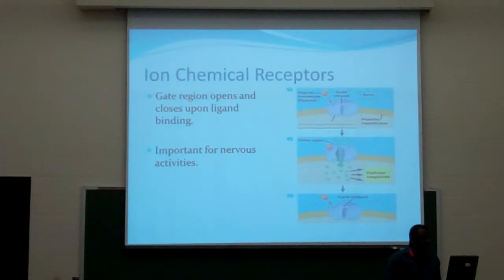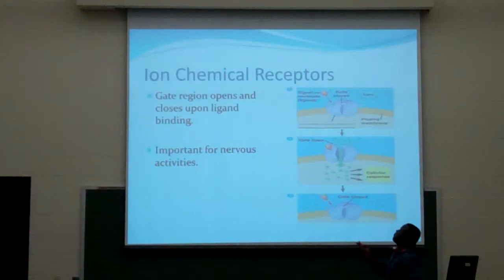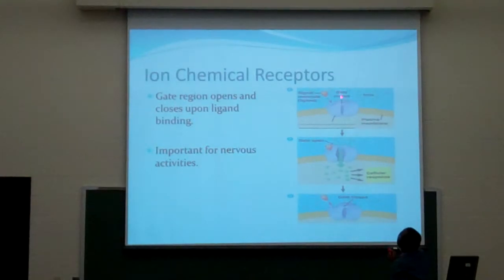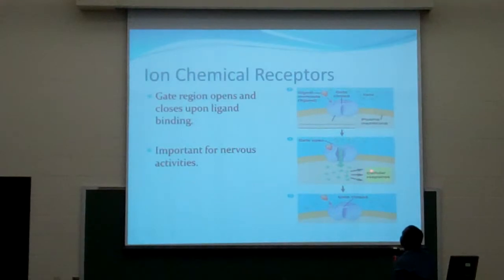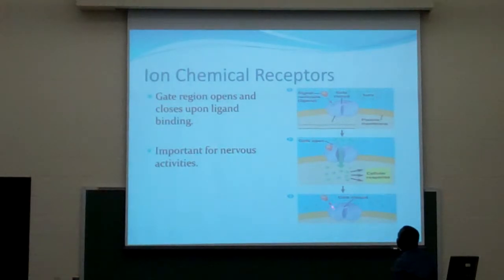This is another kind of receptor called the ion channel receptor. The ion channel receptor functions as an opening gate. When a signal is received, the gate opens and then ions flow through. When ions flow through, the concentration of that particular ion becomes greater in the cytoplasm, and then it triggers a response in the cell, which corresponds to the signal. When a signal is not received, the gate closes, and then nothing goes through.